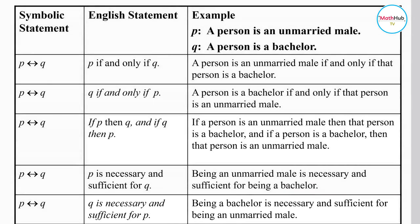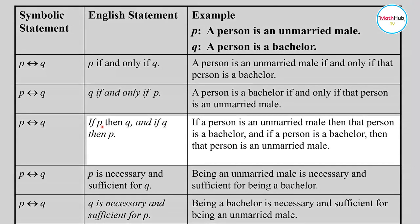'Necessary and sufficient' means the same as 'if and only if.' You can also express it as: 'if a person is an unmarried male then that person is a bachelor, AND if a person is a bachelor then that person is an unmarried male.' Both together constitute a biconditional statement.